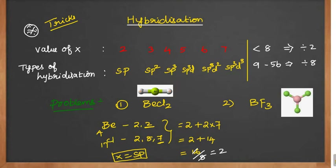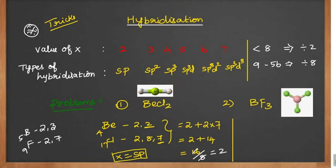Let's go to the next problem: BF₃, boron trifluoride. Boron has atomic number 5, so 2, 3. Fluorine has atomic number 9, so 2, 7. The outermost electron for boron is 3 and for fluorine is 7.